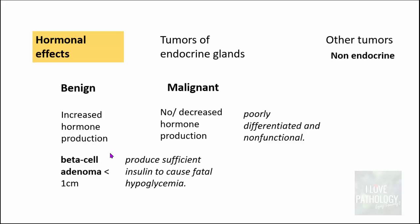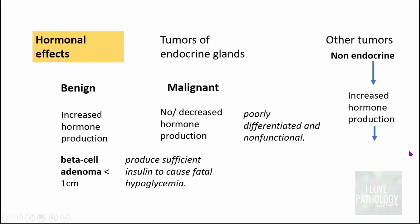Apart from tumors of endocrine glands, other non-endocrine tumors can also produce increased hormones, and that can lead to symptoms. These are known as paraneoplastic syndromes, which we will discuss in detail shortly.